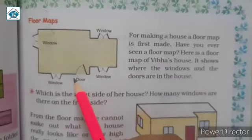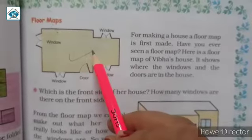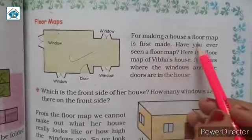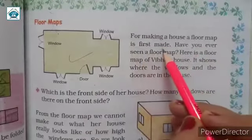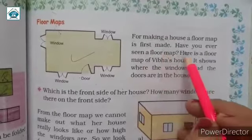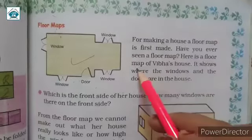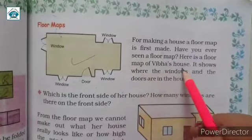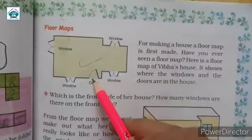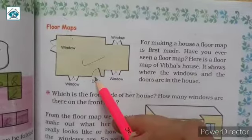So here we can see a picture. Let's know what is this. For making a house, a floor map is first made. So it is a floor map. Have you ever seen a floor map? Here is a floor map of Vibha's house. This is a floor map or you can see a layout of a house of Vibha's.